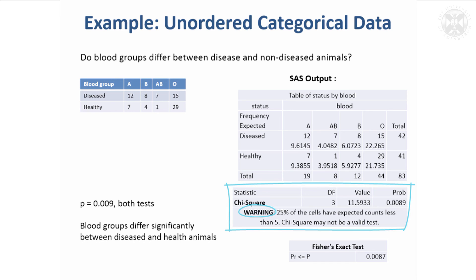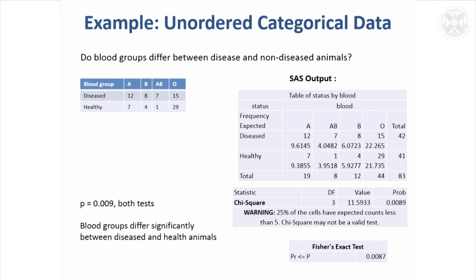That warning is a strong hint to use a different test — specifically Fisher's exact test, which gives an exact p-value. Fisher's exact test also comes out significant, giving us reassurance. The result is almost the same as the chi-squared test, so we can conclude that blood groups differ significantly between the diseased and healthy animals.